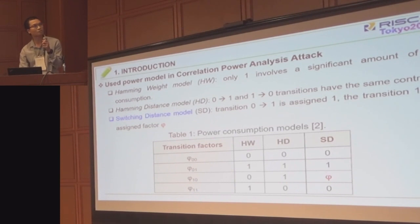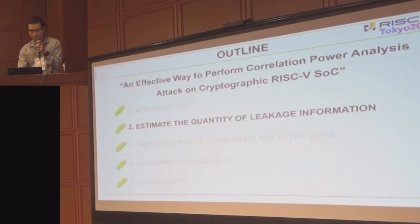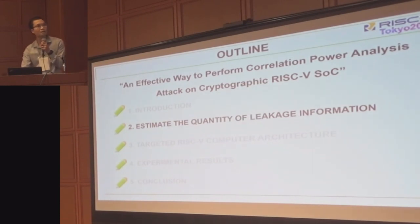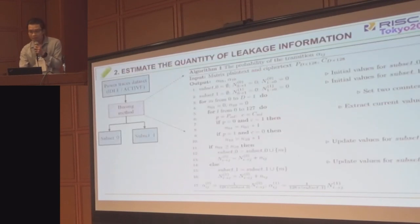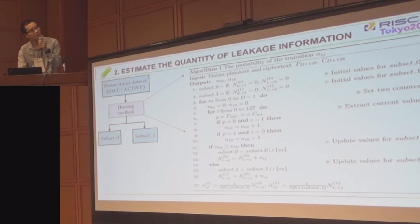In this work, we recommend two switching distance models to give better results. In this model, a transition from 0 to 1 is assigned 1, and the transition from 1 to 0 is assigned a transition factor of 3. The probability of transitions from 0 to 1 and from 1 to 0 are calculated by algorithm number 1.